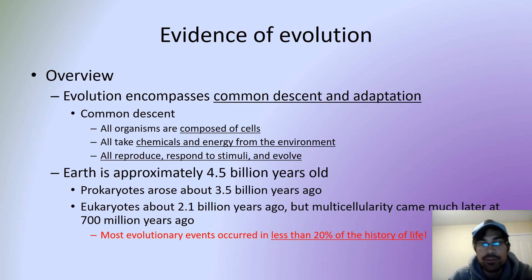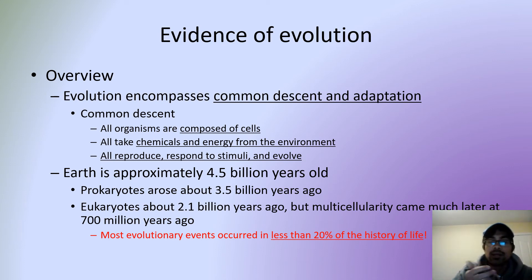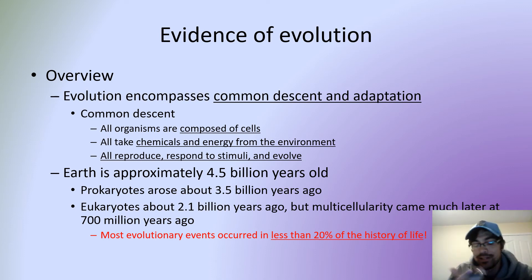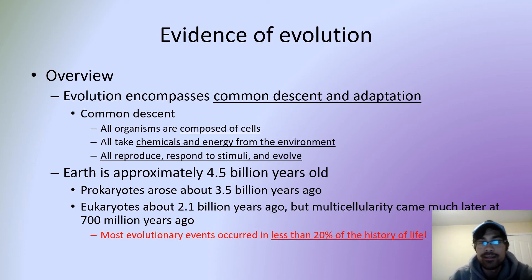The Earth is 4.5 billion years old. The first prokaryotes — bacteria and similar organisms — came about 3.5 billion years ago. Eukaryotes, which have a nucleus, appeared probably around 2.1 billion years ago — these are estimates and could be off by millions of years. Multicellularity, where organisms join together into more complex structures, happened maybe around 700 million years ago.